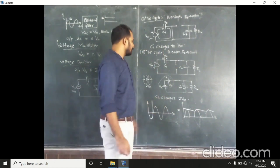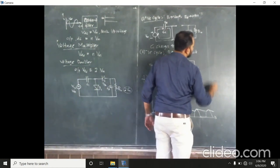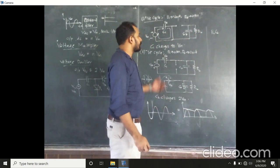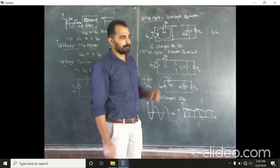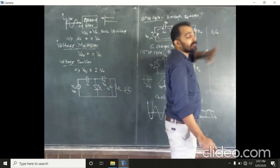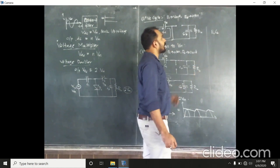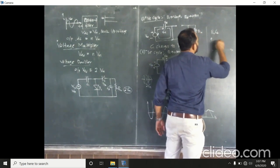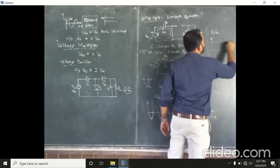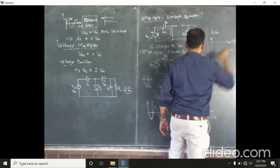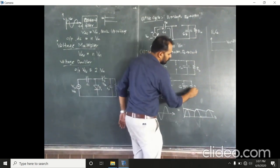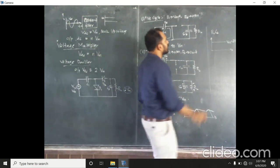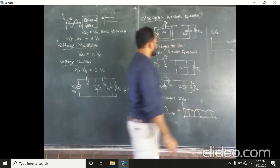If the time constant of the circuit — that is, RL and C2 — is very high compared to the period of the input signal, then we will have an almost constant VDC of 2Vm across capacitor C2. Remember that here we will have a positive polarity and here a negative polarity. So this is the working of the voltage doubler.